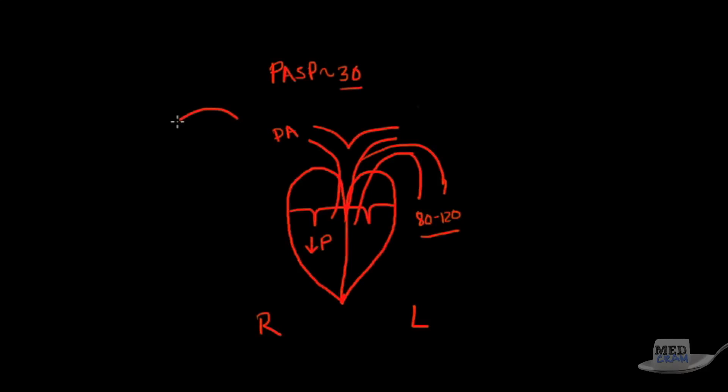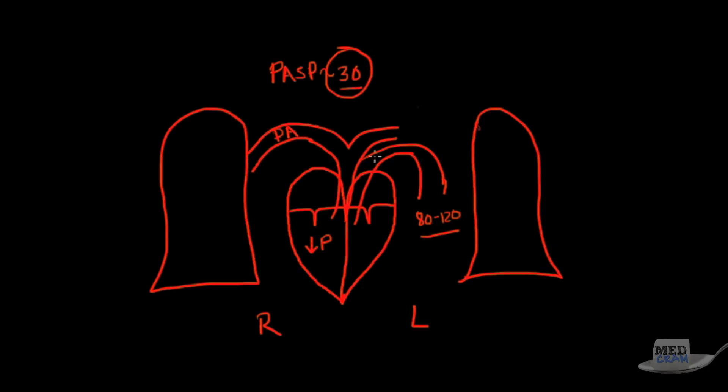Why that is important is we have to realize the lungs are sitting here on both sides of the heart. Because this blood gets pumped at such a low pressure, around 30 millimeters of mercury, gravity actually has a very large determinant about where this blood goes. So what actually happens is you have more perfusion to the lower areas of the lung than the upper areas, and areas in the upper part have lower perfusion.